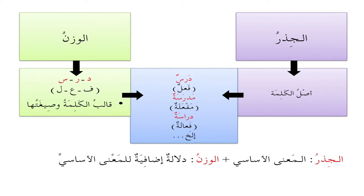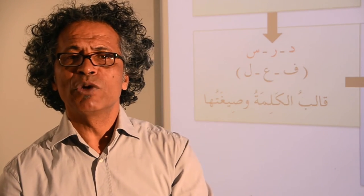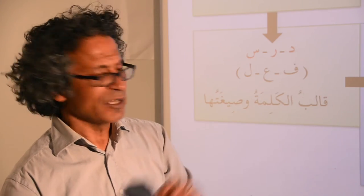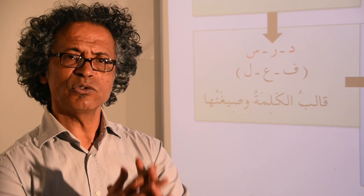درسَ: فَعَلَ، مدرسة: مَفعَلة، دراسة: فِعالة، إلى آخره. Notice — this is very important — that basically what you do is you take فَعَلَ as a form by which you measure other words. You're not concerned about the meaning of فَعَلَ in these cases; you're looking at it to say: this is my mold. How do you form this mold?